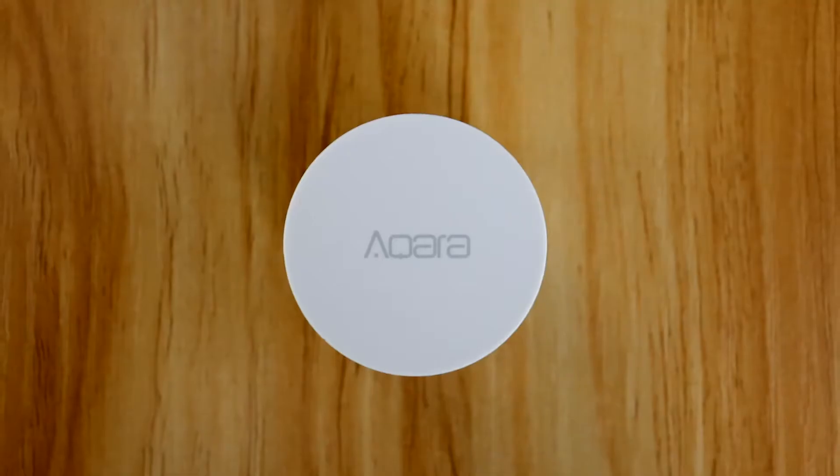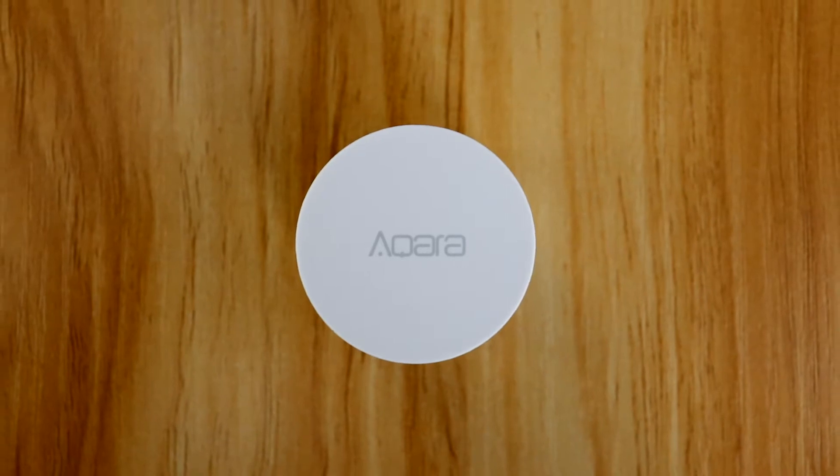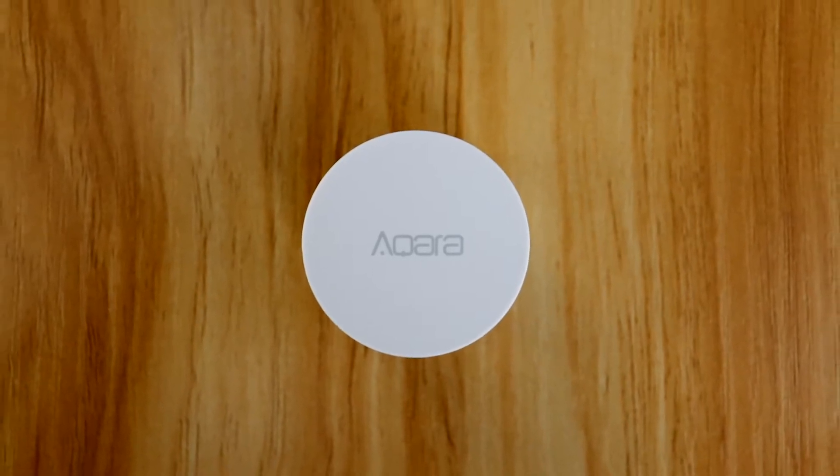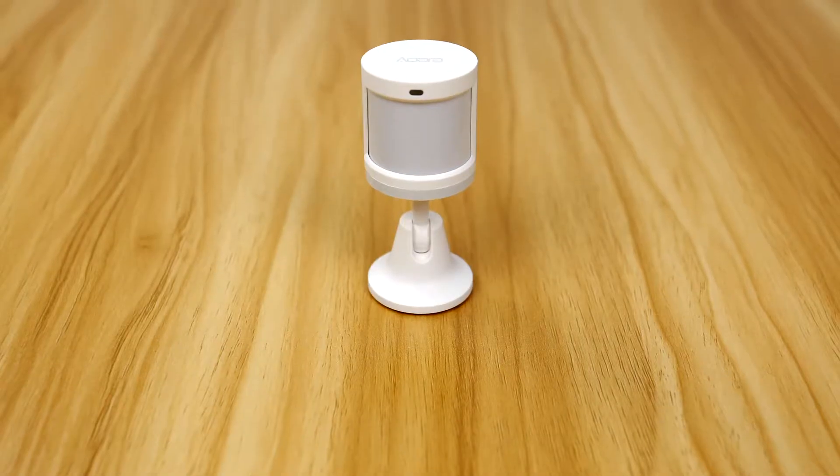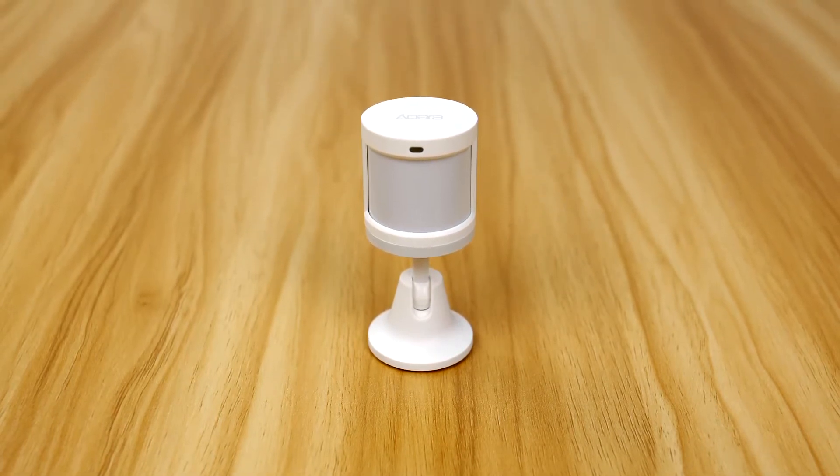Aqara Motion Sensor detects human movement with passive infrared. It works with other smart accessories to set various scenes, such as turning on or off lights automatically when it detects activity or inactivity.